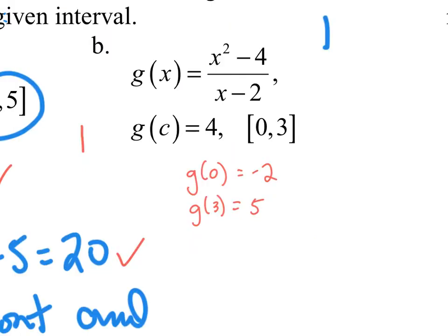So here we go again. We plug in 0 for this function in here. And we get negative 2. We plug in 3. We get 5. Oh, wait a second. 4 falls. Wait a second. There's something wrong here, though. What's wrong with this function right here? When we talk about the Intermediate Value Theorem.